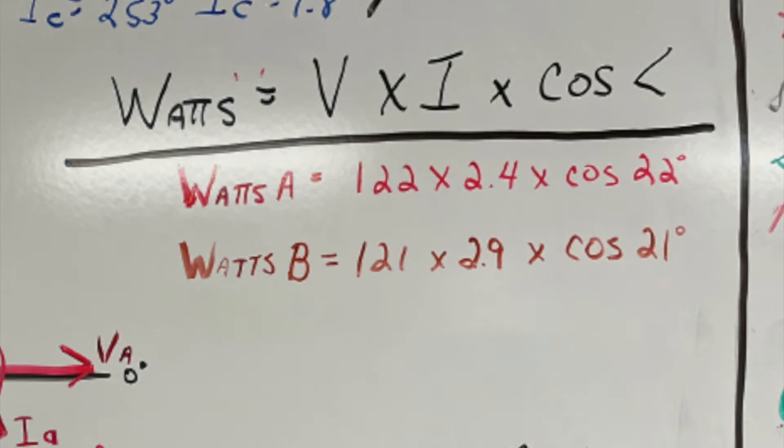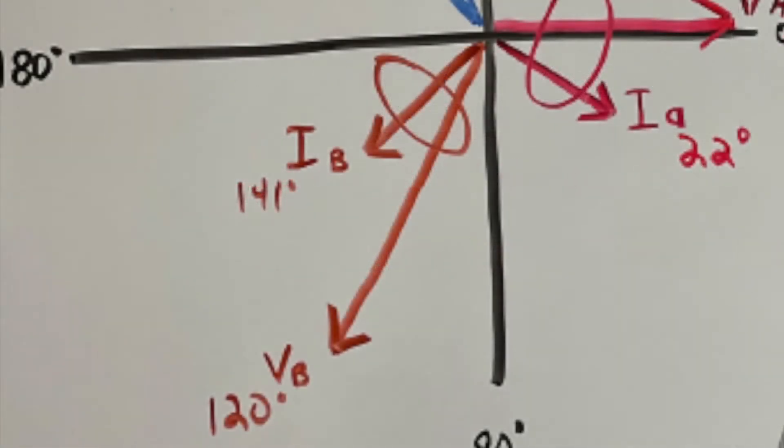And we're going to go to phase B where we have 121 volts times 2.9 amps with the cosine of 21 degrees. If we look at the chart, we're lagging by 21 degrees from voltage B.